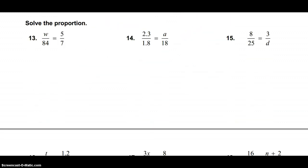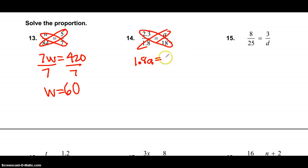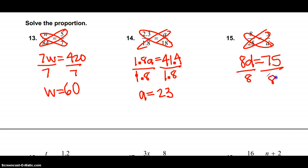13, 14, and 15. These are pretty simple. You use your cross products. So this is 7W is equal to 420. Divide both sides by 7 and W is equal to 60. Same thing here. For those of you who like to do these in your head, be prepared for decimals where you can't do them in your head. So this is 1.8A equals 41.4, divide by 1.8, divide by 1.8, and you get A is equal to 23. And 15, 8D is equal to 75, divide by 8, divide by 8, and D is equal to 9.375. Those should be pretty straightforward.